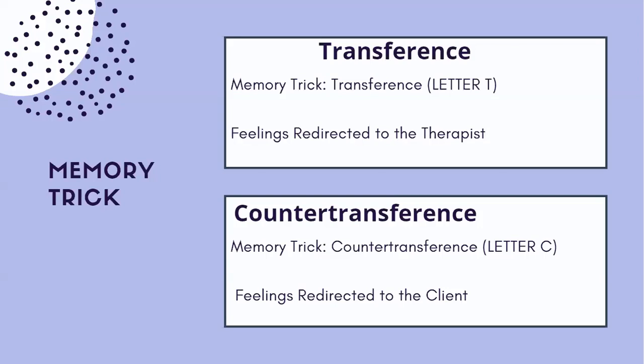For countertransference, another example is having negative feelings towards a client because they remind you of a sibling or a parent that you don't have a good relationship with. If I have a client who constantly comes in and complains, that might remind me of a coworker who constantly complains, and I might not really look forward to those sessions. That would be countertransference because I'm redirecting those feelings onto the client — they stem from how I'm interacting with the client. So that's C: countertransference.